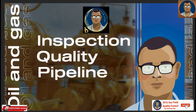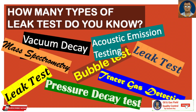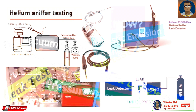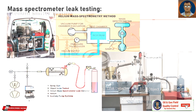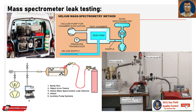Hello knowledge seekers, this is Shoman from Oil and Gas Field Quality Control. Nowadays we are discussing about leak testing. In the last video we discussed about the helium sniffer testing — if you have not listened to it, please go through it. This video runs on the same principle: mass spectrometer leak testing, which is a way to detect very small leaks across a pressure boundary using helium gas.